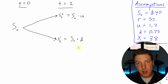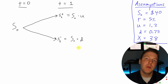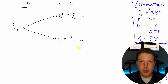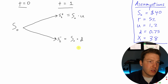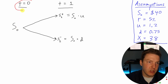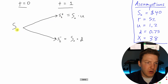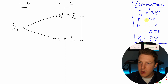In this example, we're going to keep it simple and assume that our options just have a one-year time period. We're going to start at t equals zero, which is just today, and make the assumption that our stock's price today, S0, is equal to $40.